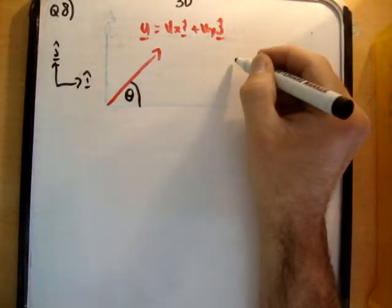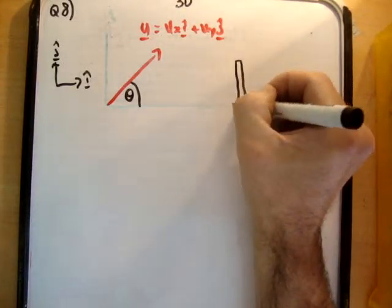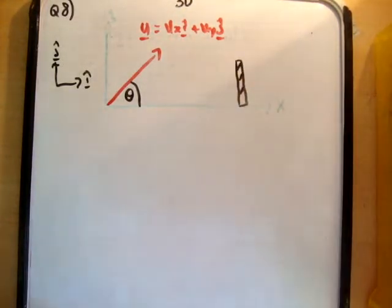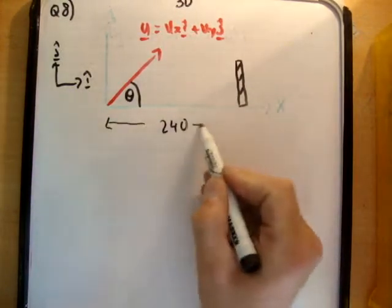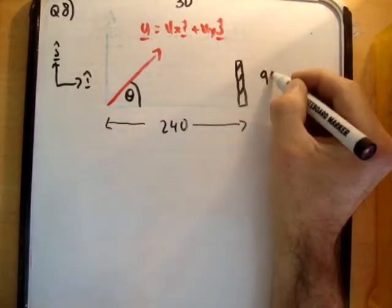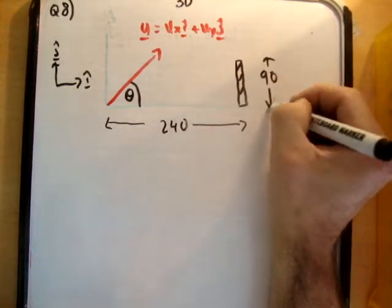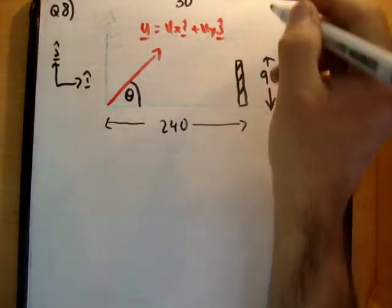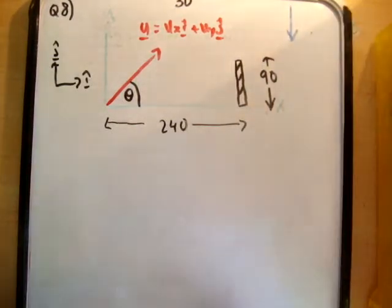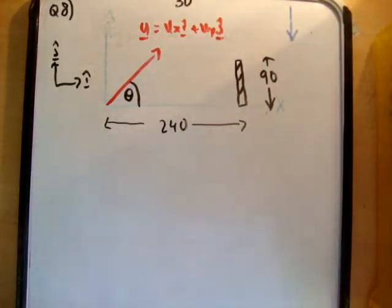And finally we draw a wall. Now we know the wall is 240 meters from the point of projection and the wall is 90 meters high. So the gravity vector is the only thing I haven't put on this. I'm going to draw that over in the corner here. Now I know this diagram is looking quite busy, but I hope that at this stage you will be able to understand this.